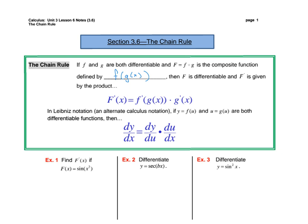The chain rule applies when you have a composition. If f and g are both differentiable and capital F is equal to f∘g — the composite function defined by f of g of x — you have seen this notation f∘g back in pre-calculus. We have also seen it written as f of g of x. Those are the same.